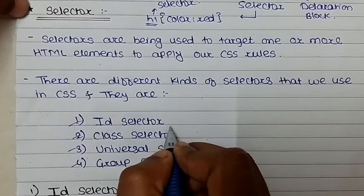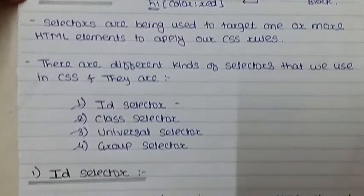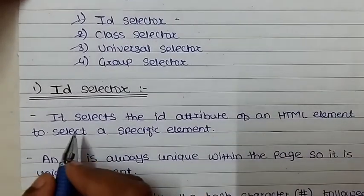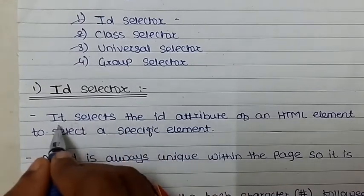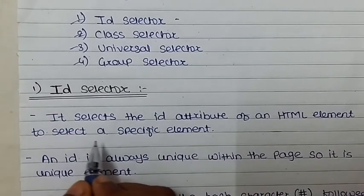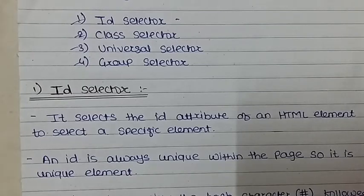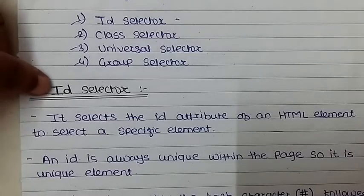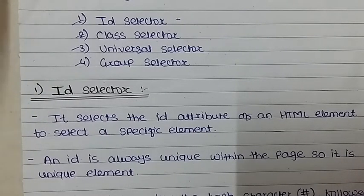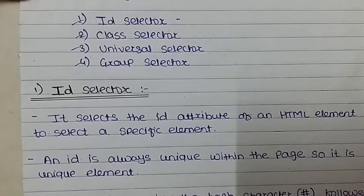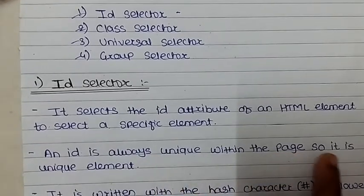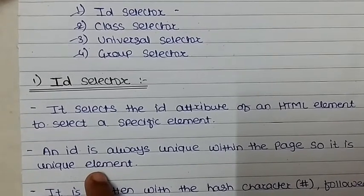In this video we will learn about the ID selector. When we talk about ID selectors, it selects the ID attribute of an HTML element to select a specific element. When we want to select a specific element we use the ID selector, because ID is the identifier of a particular element.